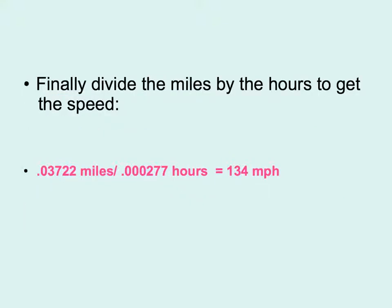Finally, we divide the miles by the hours to get our speed. So 0.03722 miles divided by 0.000277 hours, and we get that the vehicle was traveling 134 miles per hour.